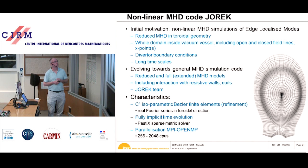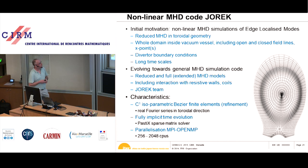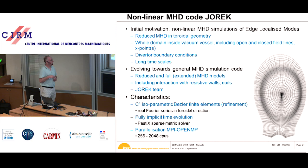We use a fully implicit time evolution because the timescales in MHD — the Alfvén time of about half a microsecond — are very disparate from the timescales we want to simulate, such as 100 milliseconds for a vertical displacement event. This strong disparity in timescales requires fully implicit time evolution. We use PASTIS as the sparse matrix solver. Parallelization is done with MPI and OpenMP, typically running up to 2000 processes.